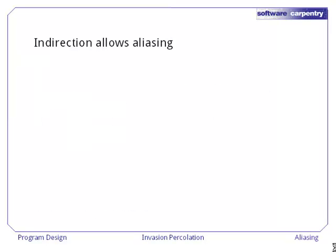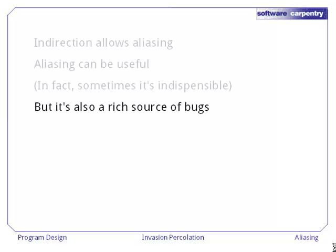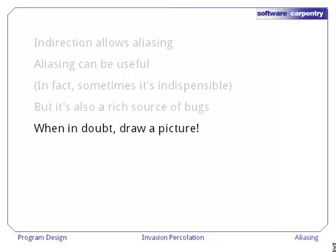Anytime we're using indirection, it allows aliasing — it allows us to have two or more references to the same object. This can be very useful; in some situations, it's absolutely essential. But it can also be a rich source of bugs. Whenever you're in doubt about what your data structures are supposed to look like, draw a picture and check it against the code.